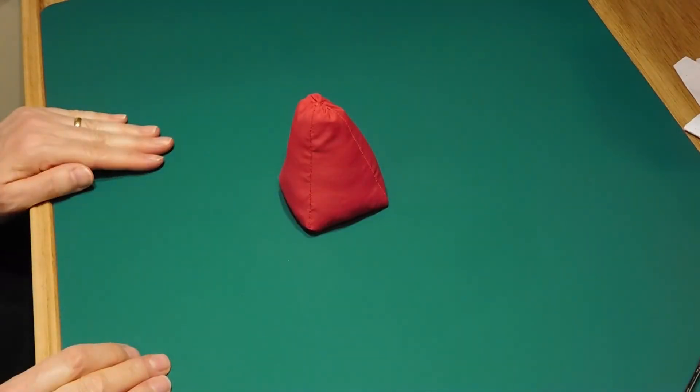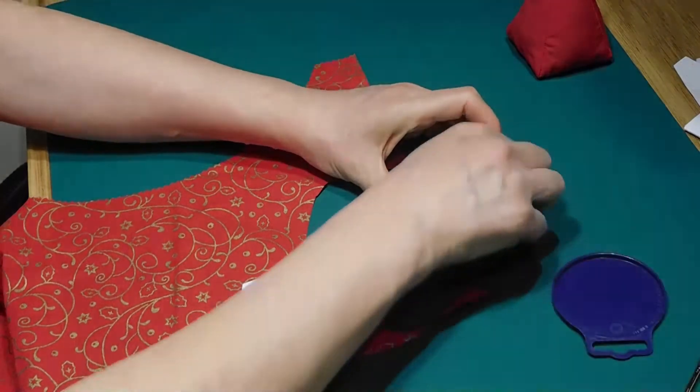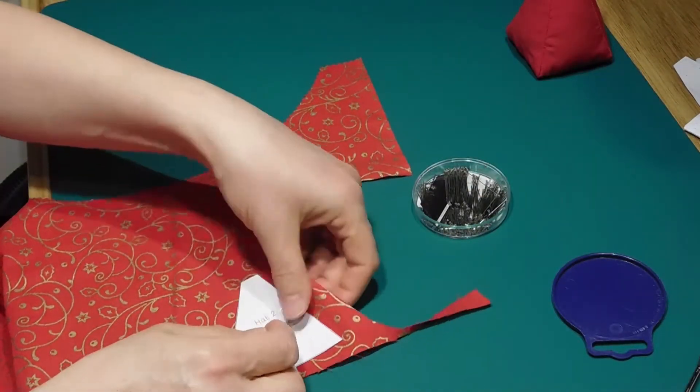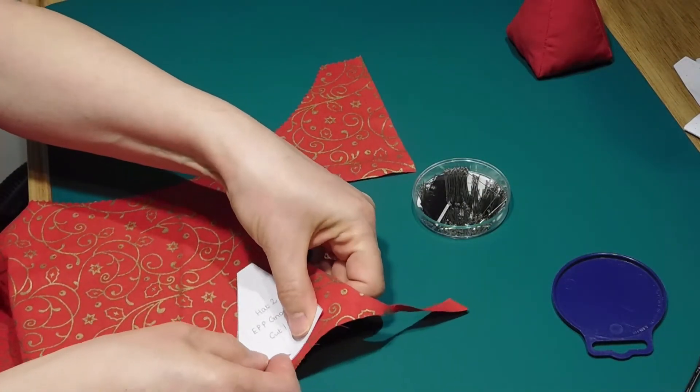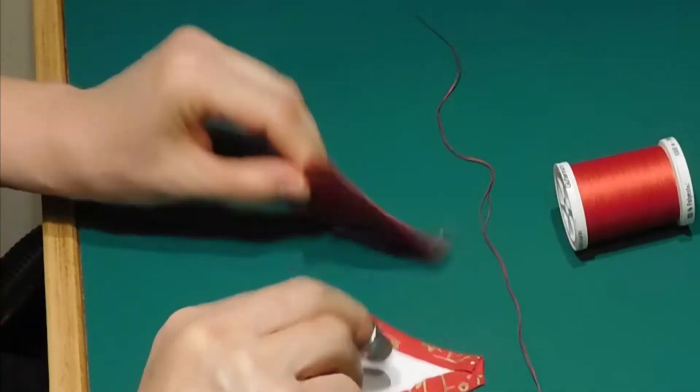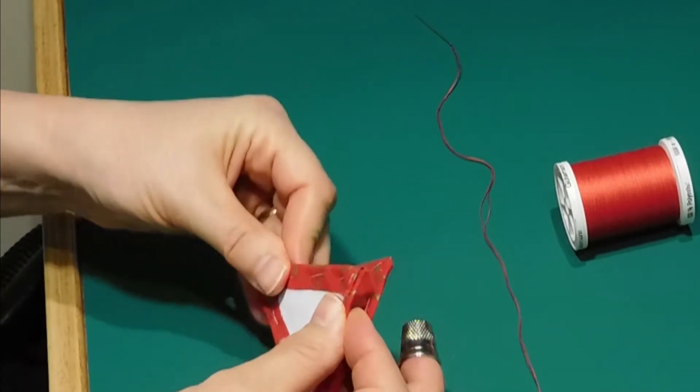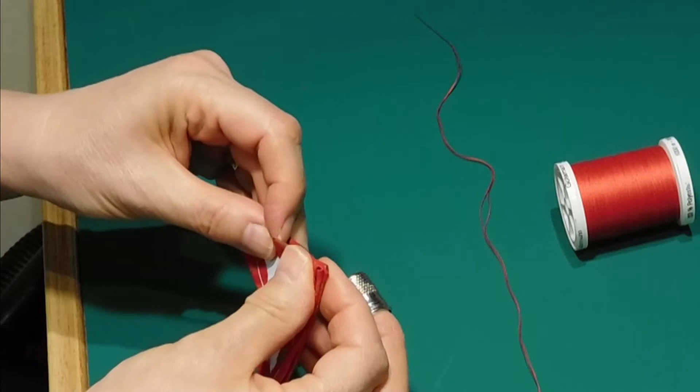Cut out two pieces of fabric using the hat templates, adding the usual one centimeter or three eighths of an inch allowance all round. Pin and then tack these as you did with the body sections. Over sew or whip stitch them together along the top and side edges, but not the bottom.